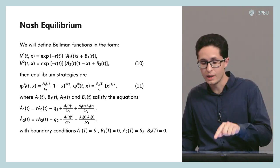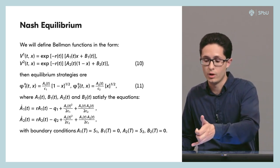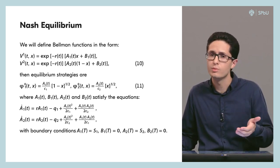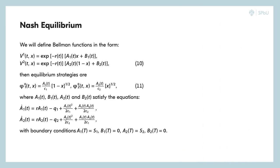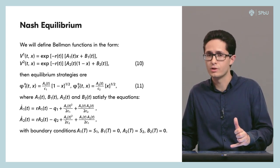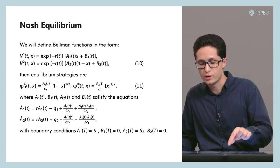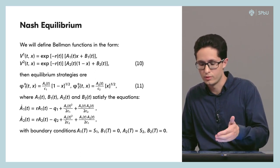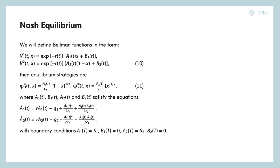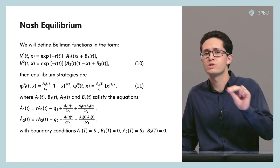The strategies and Bellman functions also depend on unknown functions b1(t) and b2(t). To find these, we use the same approach as in the optimal control problem: we derive a system of differential equations for a1(t), a2(t), b1(t), and b2(t). By solving this system, if a solution exists, we substitute these functions into the equilibrium strategies and Bellman functions, then substitute the equilibrium strategies into the motion equations to derive the trajectory corresponding to the Nash equilibrium.